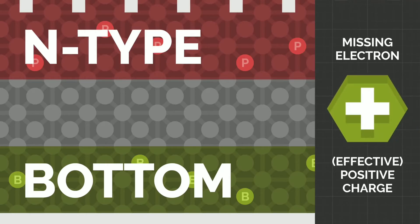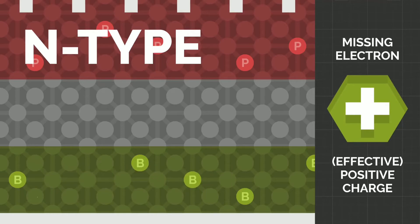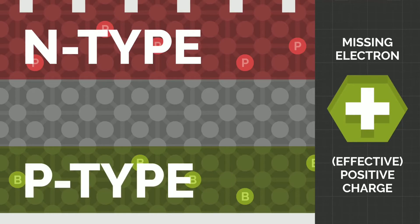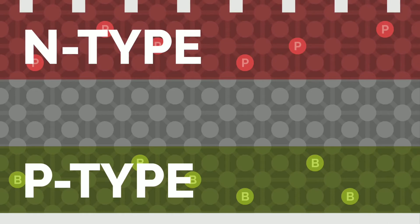A missing electron can be described as an effective positive charge. Therefore, the bottom layer is called positive type, or p-type, as it preferentially favors the collection and transport of these positive charges, also dubbed holes. The thicker middle layer has only slightly fewer electrons, making it marginally p-type. Thin metal lines, typically made of silver, are printed on the top n-type layer, and the bottom p-type layer is in contact with an aluminum plate.